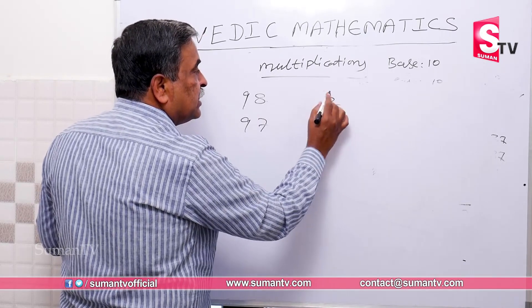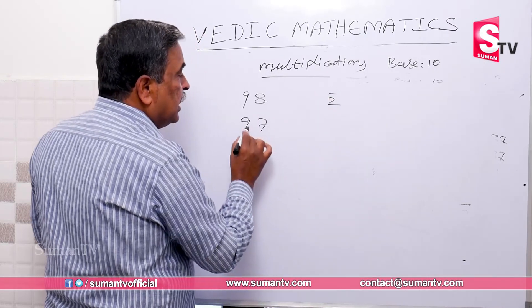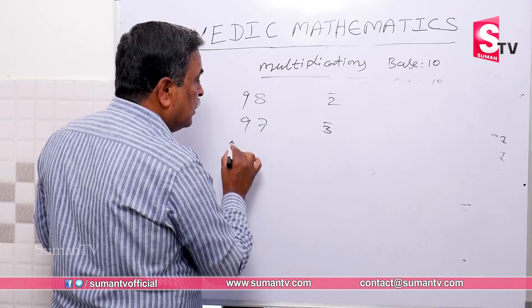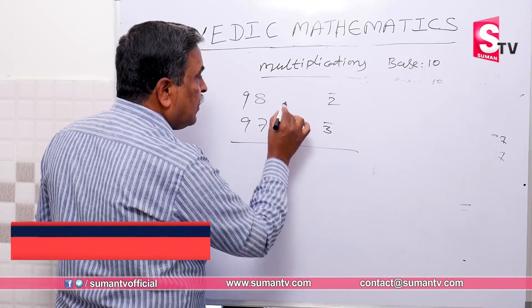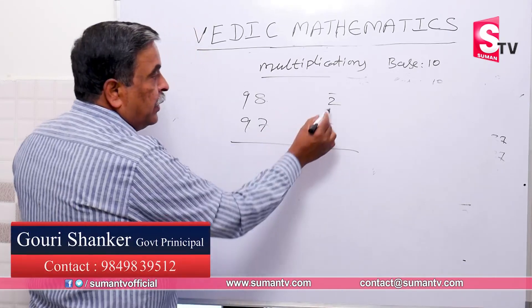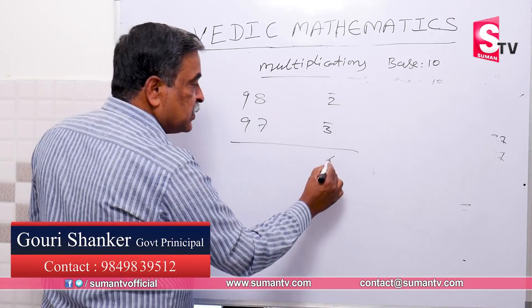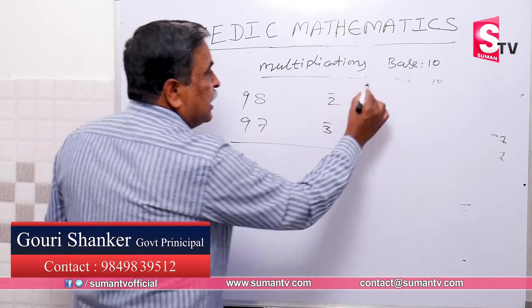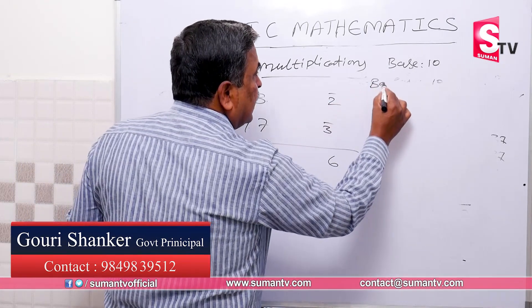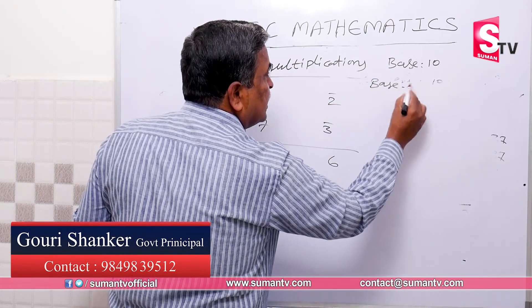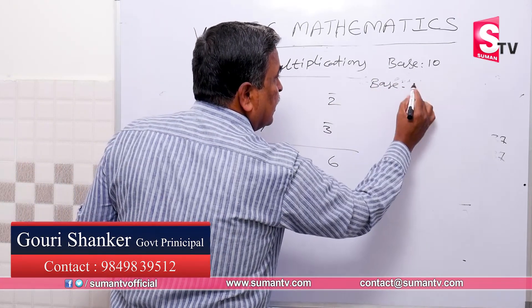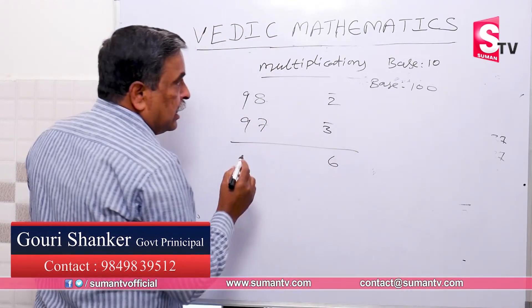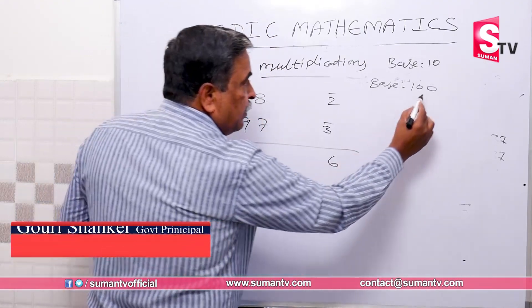So minus two, this is minus three. Now we have six. Base is 100, so direct base is 1. So this base is 1, this is the base.